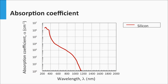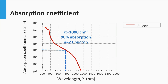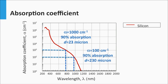Let's consider the third design rule: light trapping. At a wavelength around 800 nm, crystalline silicon has an absorption coefficient of 1000 per centimeter. Using Lambert's law, to realize 90% absorption at 800 nm requires an absorption path length of 23 microns. Around 970 nm, the absorption coefficient is 100 per centimeter, requiring a path length of 230 microns to absorb 90% of the light. This is a typical thickness of a silicon wafer, demonstrating that light trapping techniques become important for crystalline silicon above a wavelength of 900 nm.